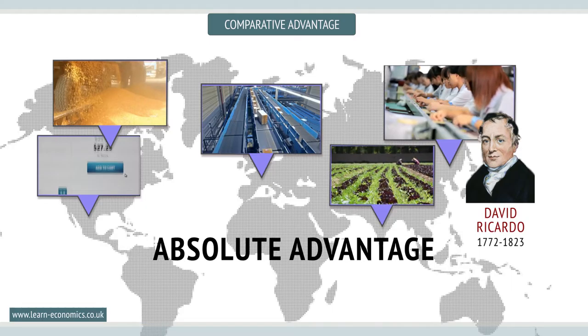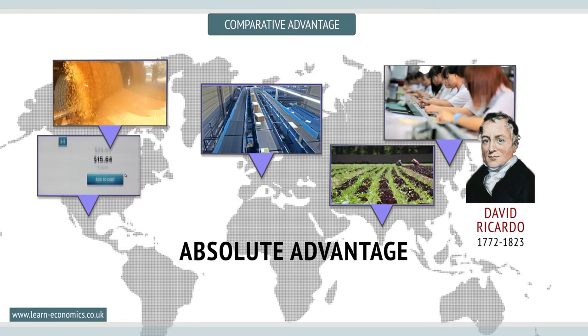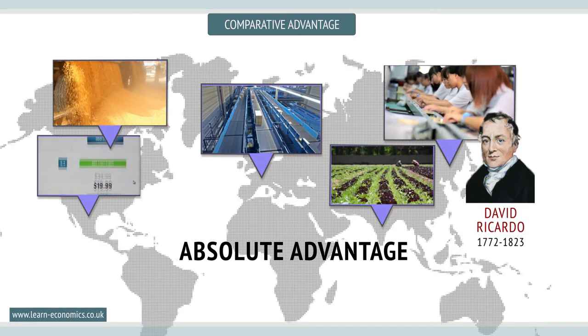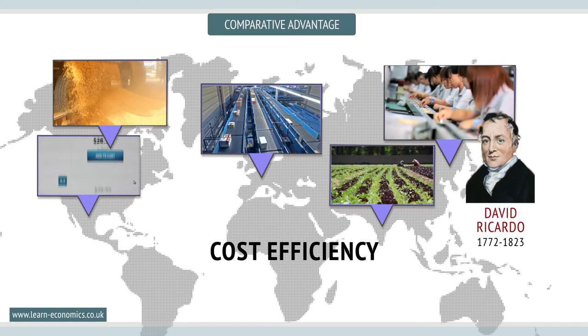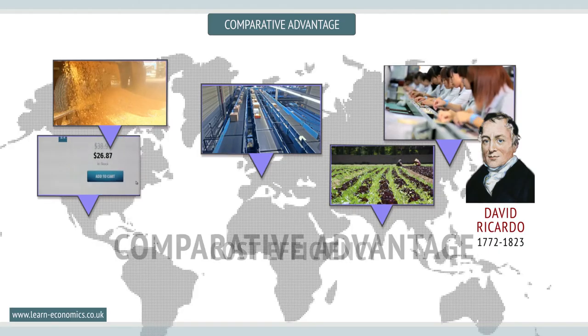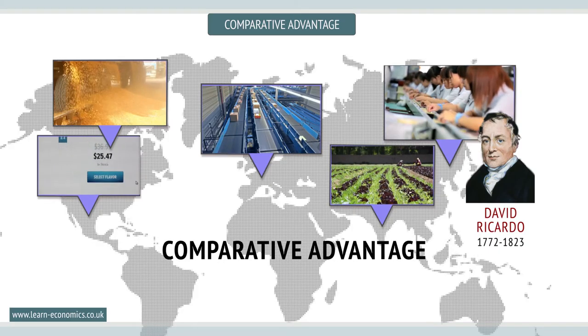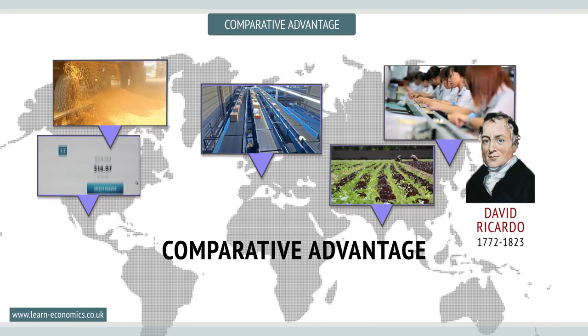While an absolute advantage means one country is more cost efficient than the other, comparative advantage relates to the extent to which one country is more efficient.